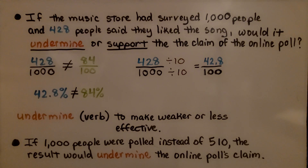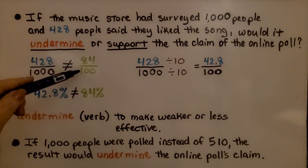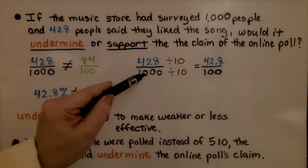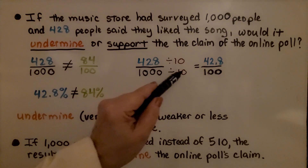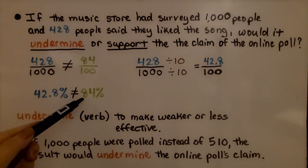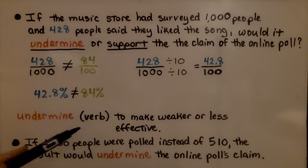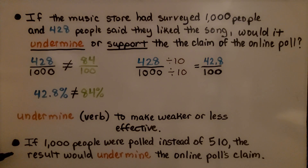If the music store had surveyed 1,000 people and 428 people said they liked the song, would it undermine or support the claim of the online poll? That poll said 425. We write 428 over 1,000 — it does not equal 84%. If we give this a denominator of 100, we divide both 1,000 and 428 by 10, getting 42.8, and that is not 84%. 'Undermine' means to make weaker or less effective, so if 1,000 people were polled instead of 510, the result would undermine the online poll's claim.